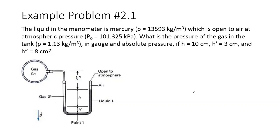What is the pressure of the gas in the tank? The gas density is 1.13 kilograms per cubic meter in gauge and absolute pressure. If h is 10 centimeters, h-bar is 3 centimeters, and h prime is 8 centimeters.